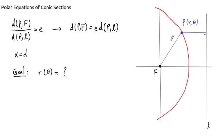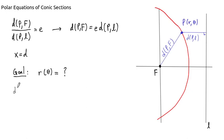The length of the segment from P to F is D of PF, and the length of the segment to the directrix is DPL. Because we're in polar coordinates, the distance between P and F is just the radius — just the R coordinate. So D of PF equals R.